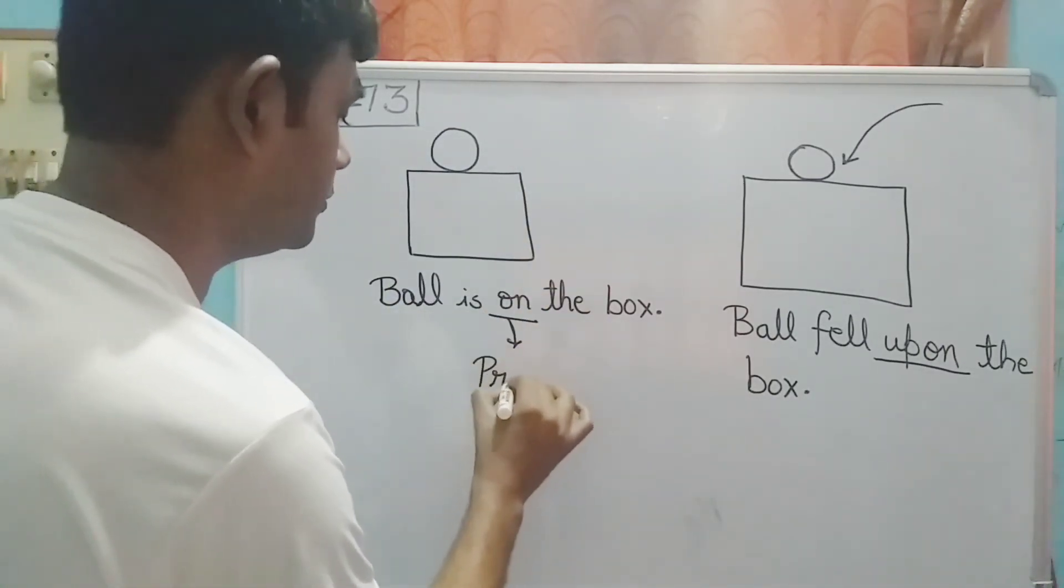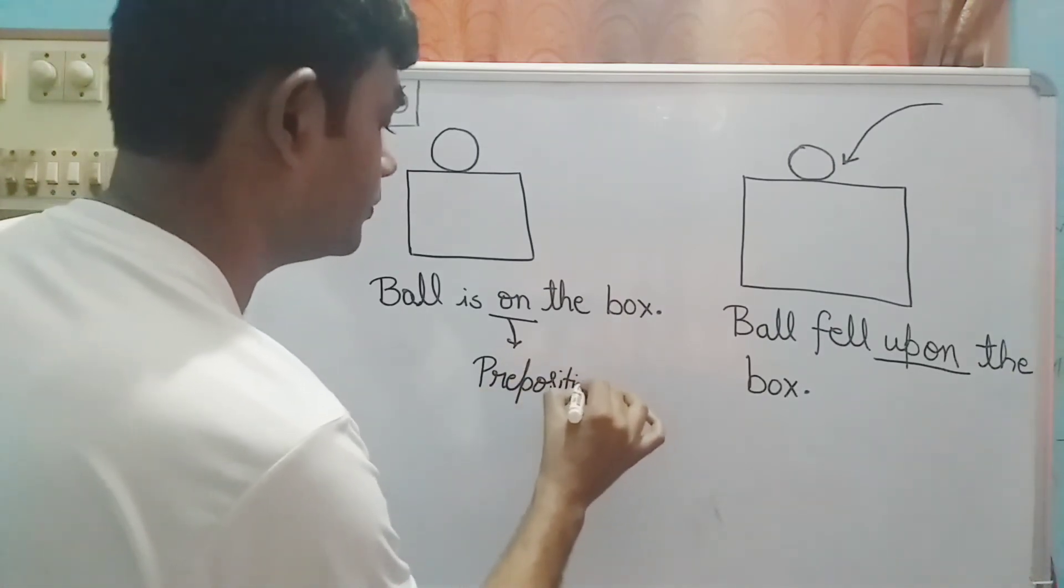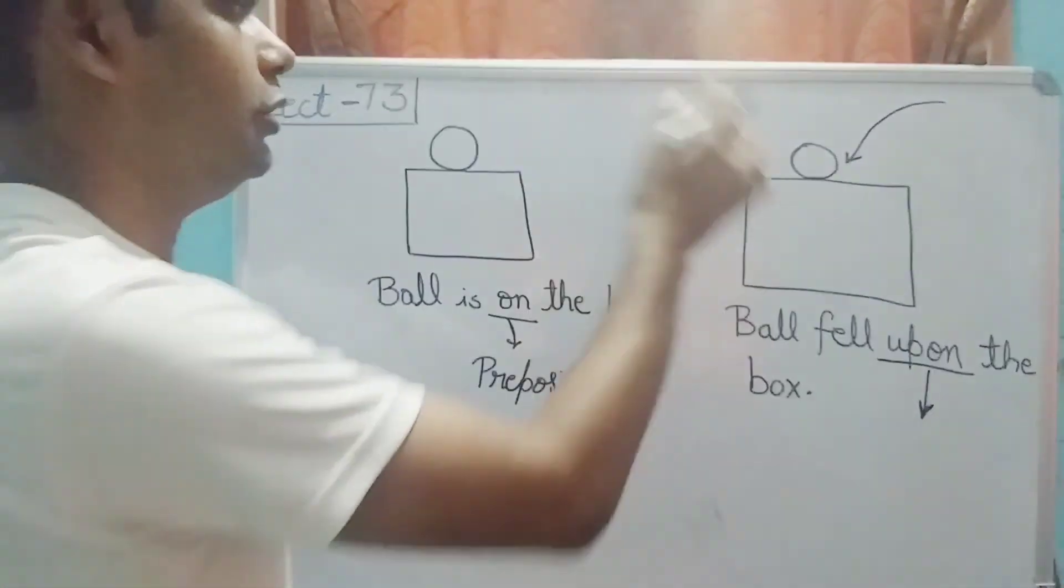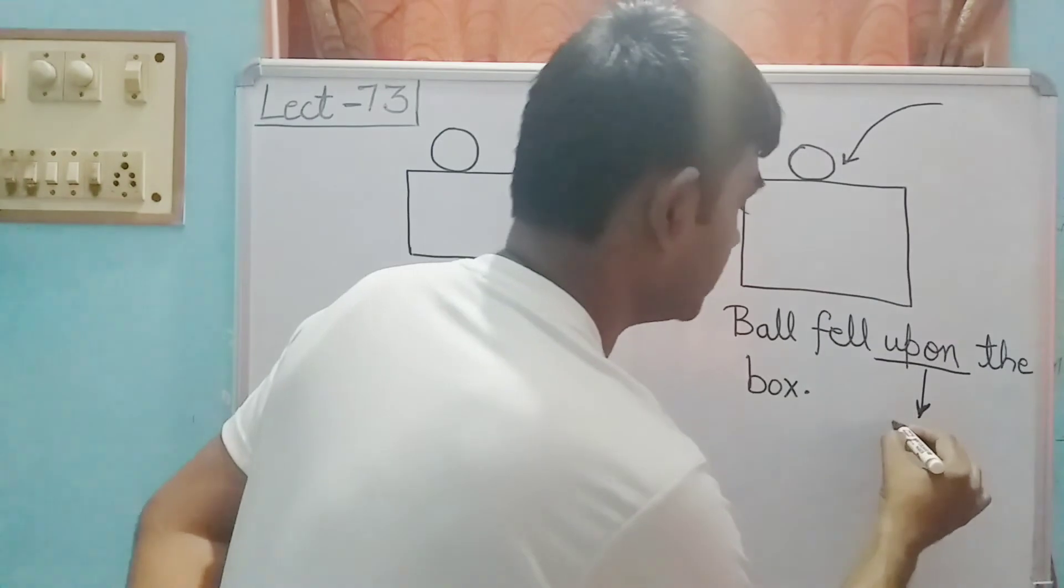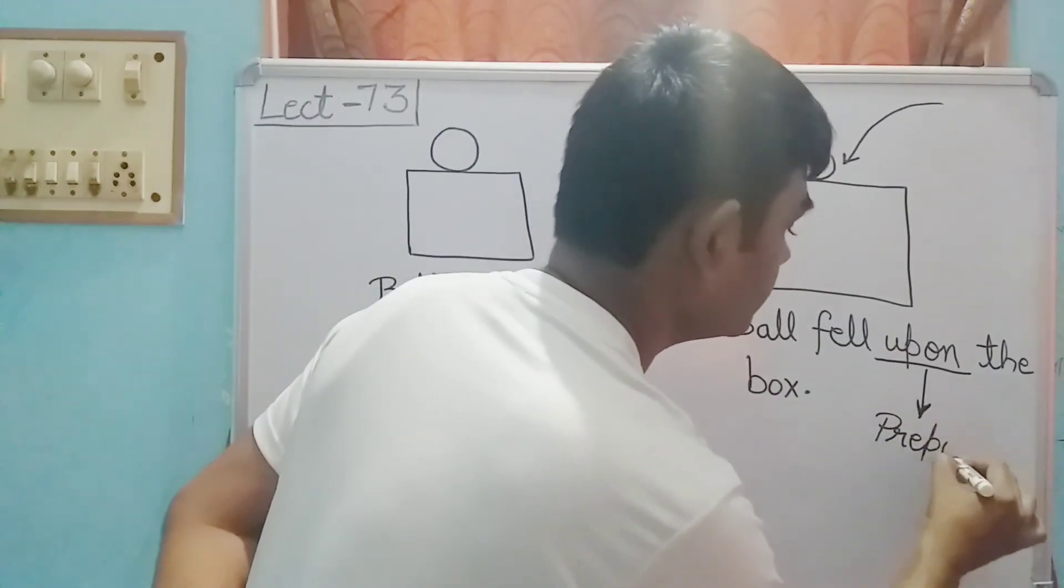So here 'upon' is our preposition. One preposition is 'on' for static condition, and for moving condition when the ball is falling, we use 'upon' as the preposition.